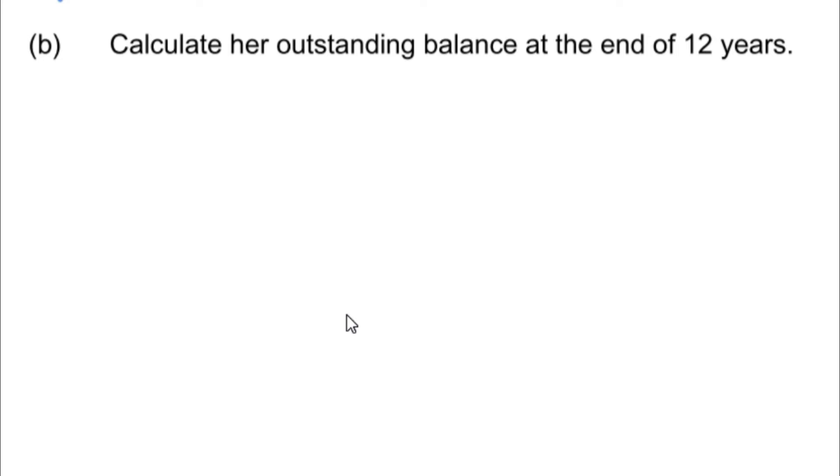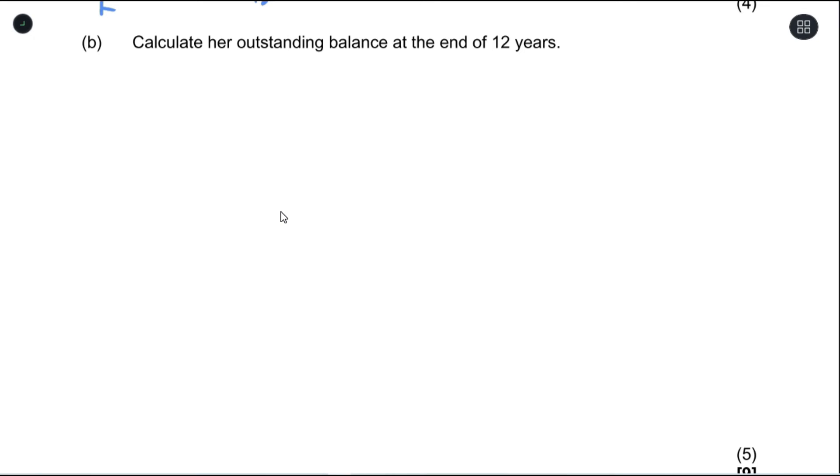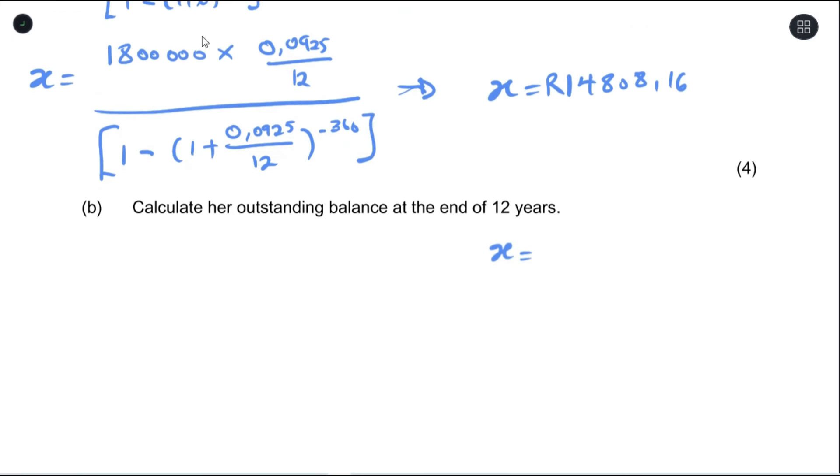Part B asks us to calculate her outstanding balance at the end of 12 years. The outstanding balance is the present value after 12 years. So we're still going to use present value formula. There are some things that will still remain the same. Our X would be the same thing we had in the previous question, which was 14,808.16. Our interest rate would also remain the same, so this would be 0.0925 divided by 12.